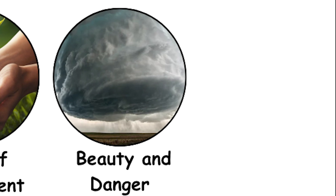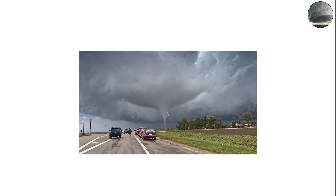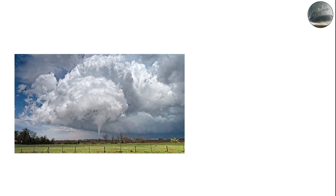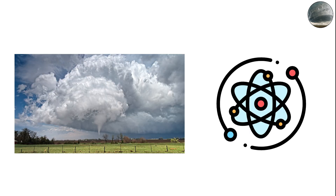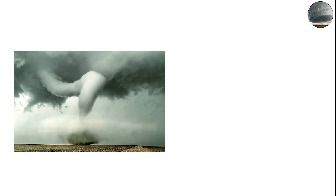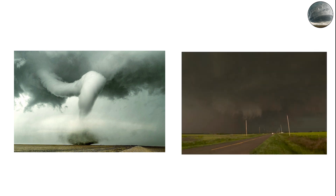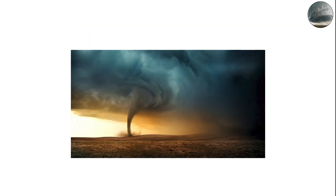The beauty and danger behind every shape. Each tornado shape represents a balance of chaos and order — a temporary masterpiece created by physics. From the thin ropes that dance across fields to the monstrous wedges that darken the horizon, tornadoes remind us how small we are in the face of nature's raw power.